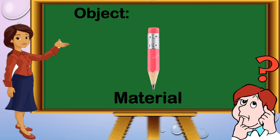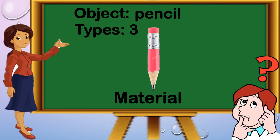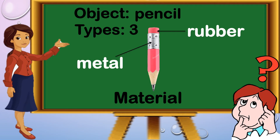Another example is pencil. There are three types. First, the upper portion or the eraser is made up of rubber. Another one is metal. We also have wood. So the three types are rubber, metal, and wood.